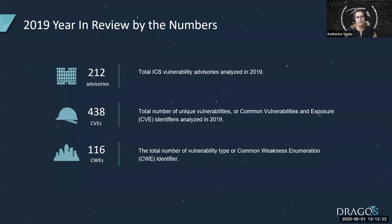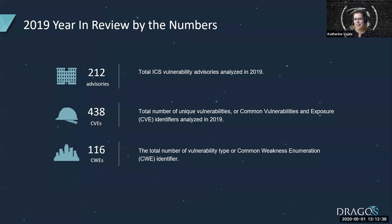We had a total of 212 ICS vulnerability advisories that we analyzed in 2019. Most of those were ICS as a source, but relevant blogs and other sources were also included. The total number of unique vulnerabilities or CVEs in 2019 were 438, and these are what we reference when we say a vulnerability — that's one per CVE. And the total number of vulnerability types were 116.